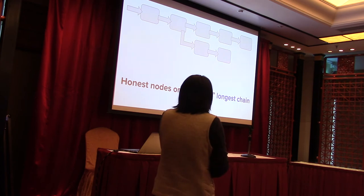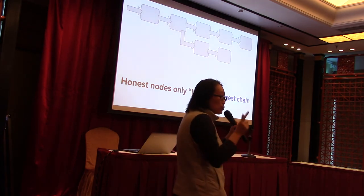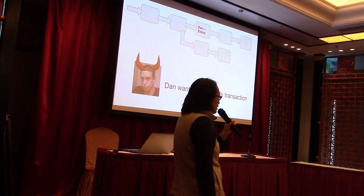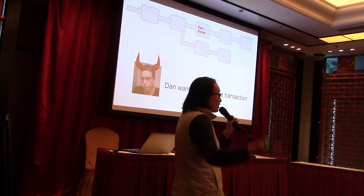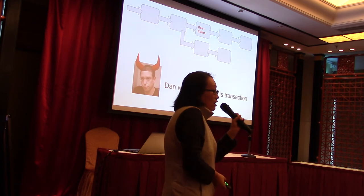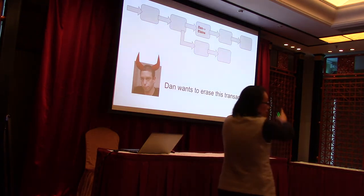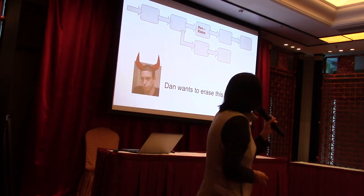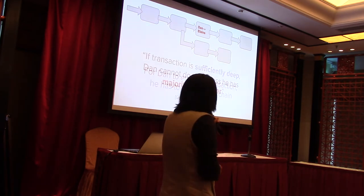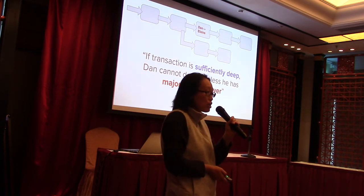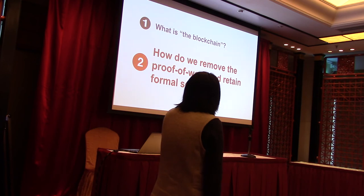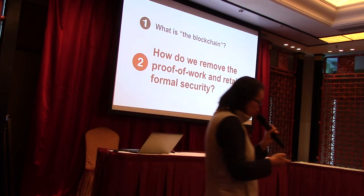An important aspect of the blockchain protocol is the longest chain rule: if you see forks, you pick the longest chain. This is important for security — if an adversary wants to erase a transaction to double-spend, he needs to mine a longer fork. If he doesn't have enough computation power, he can never mine a longer chain and therefore cannot erase the past. Once a transaction is embedded deep enough in the chain, it is considered secure and can be confirmed.